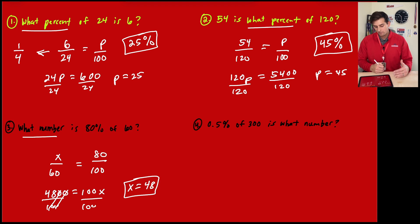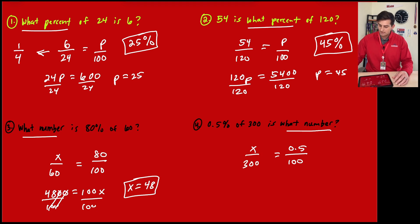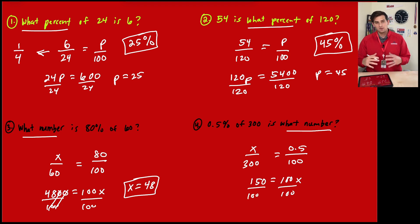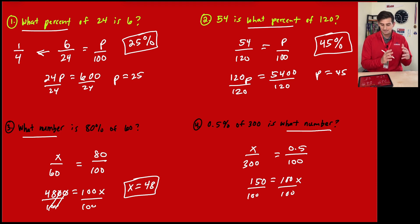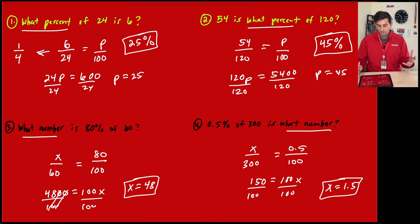Number four: '0.5% of 300 is what number?' We have 0.5 over 100 equals x over 300. Cross multiplying: 300 times 0.5 gives 150, which equals 100x. Dividing by 100 means moving the decimal twice to the left, so 150 becomes 1.5. So x equals 1.5.